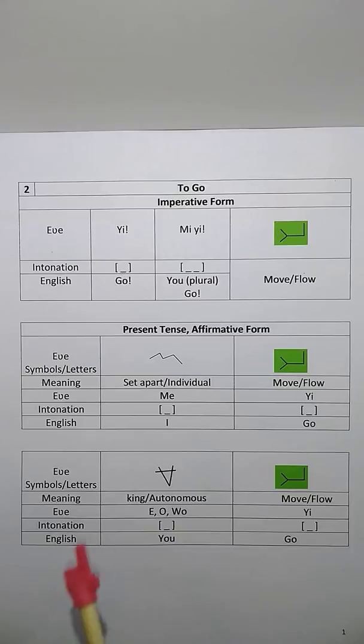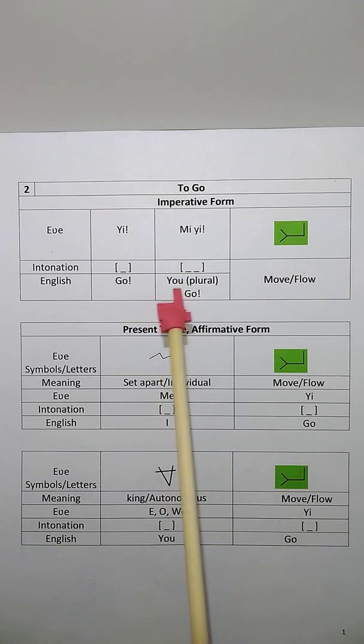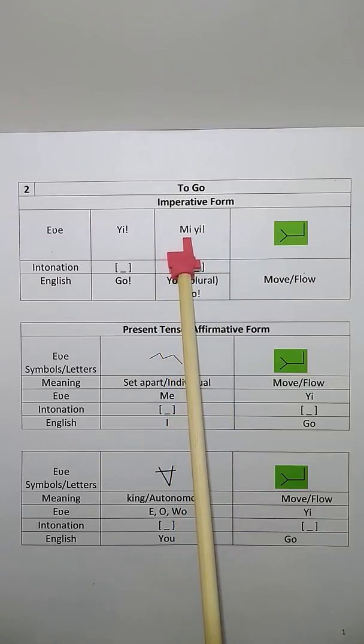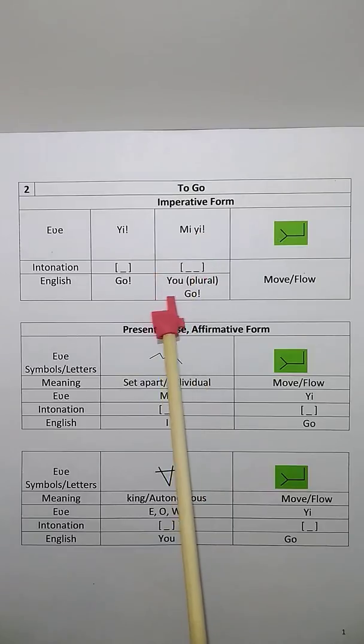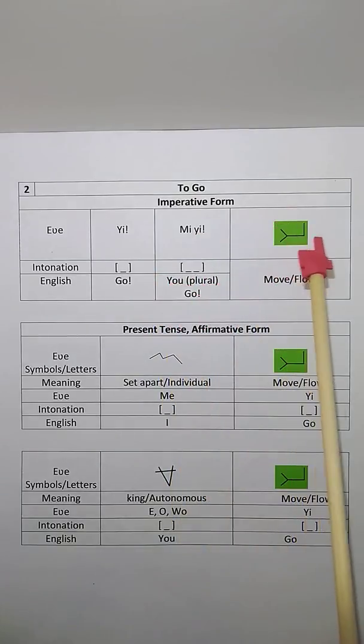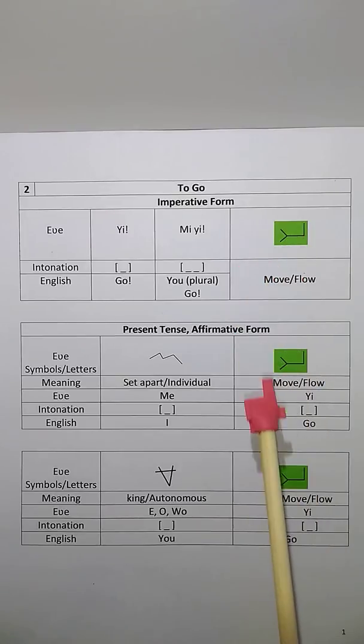So how do you say go in ancient Hebrew? It is ye. And you go, or go ye, it is me ye. Me is you, and ye is go. So me ye, go ye, or you go. This is the Ya symbol, the flow, and this is where the letter Ya derives from.